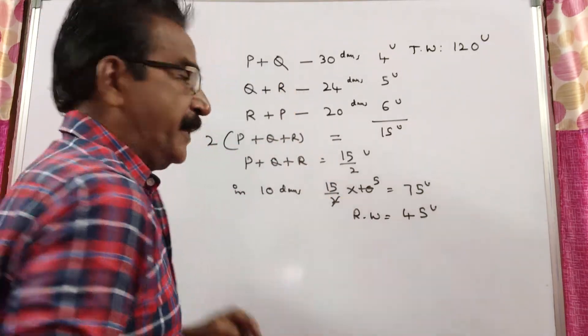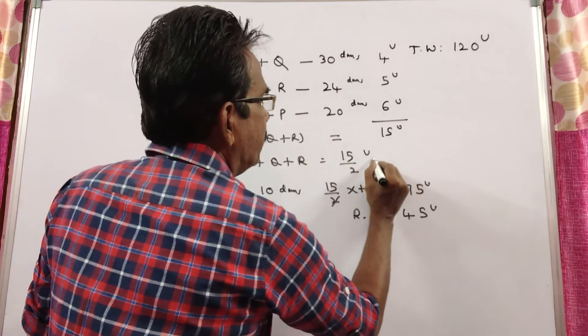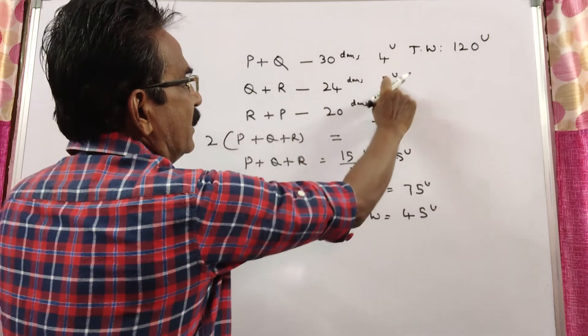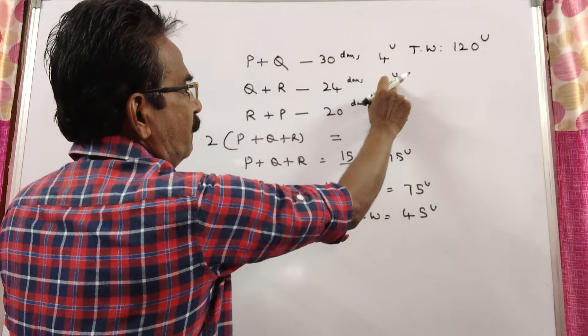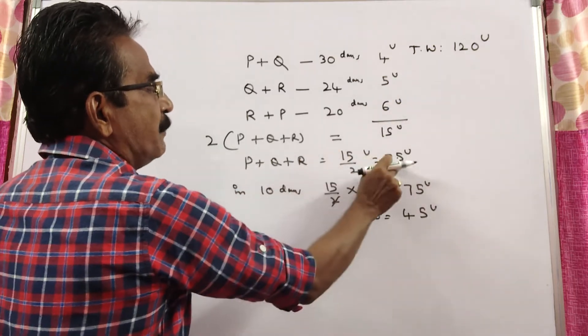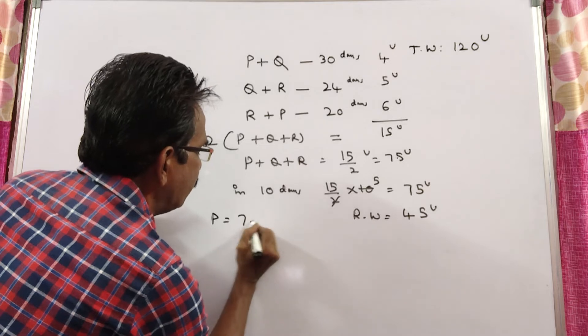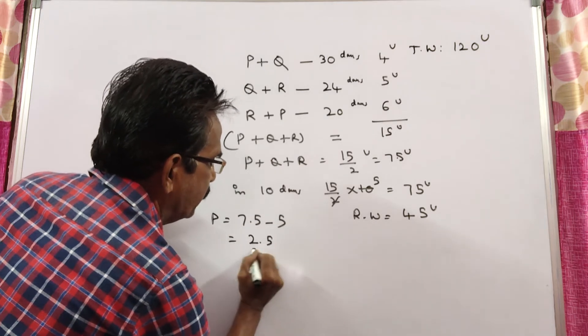What is the capacity of P? See, P plus Q plus R, 15 by 2 means 7.5 units. Q plus R, 5 units. So, P plus Q plus R, 7.5, Q plus R, 5. So, P, 7.5 minus 5, P can do that is equal to 2.5 units per day.